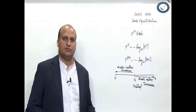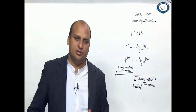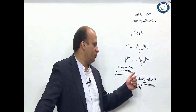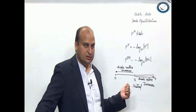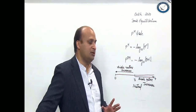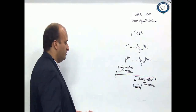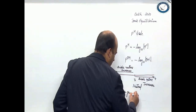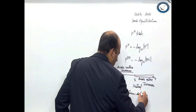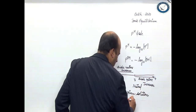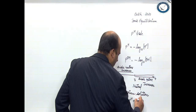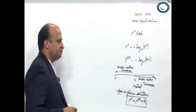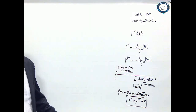This part you all would have studied in your class 10th. I am going to take it forward. Why is it so that the pH scale varies from 0 to 14? Why is it so that when you move from 7 towards 0, the acidic nature increases? Why is it so that when you move from 7 to 14, the basic nature increases? Why is it so that for a given solution, pH plus pOH is equal to 14? These questions we will try to get the answer for.